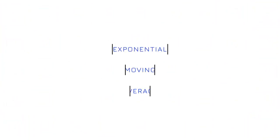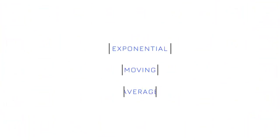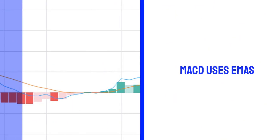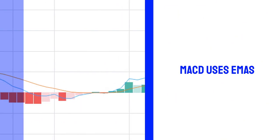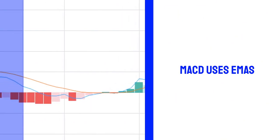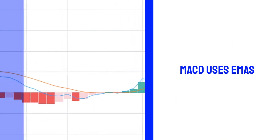EMA stands for Exponential Moving Average. Exponential Moving Averages place emphasis on the current price action. The MACD is created from the use of EMAs, which themselves are created from SMAs.